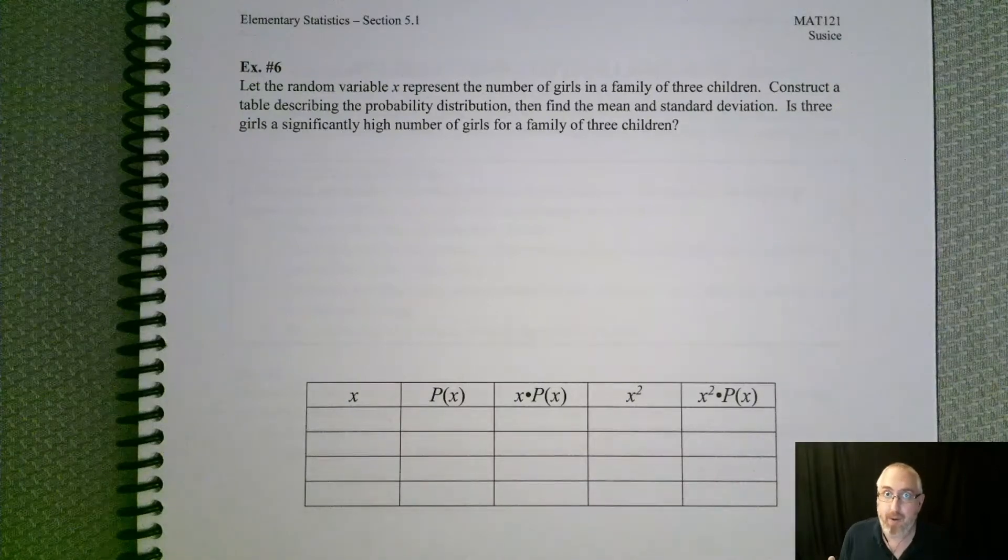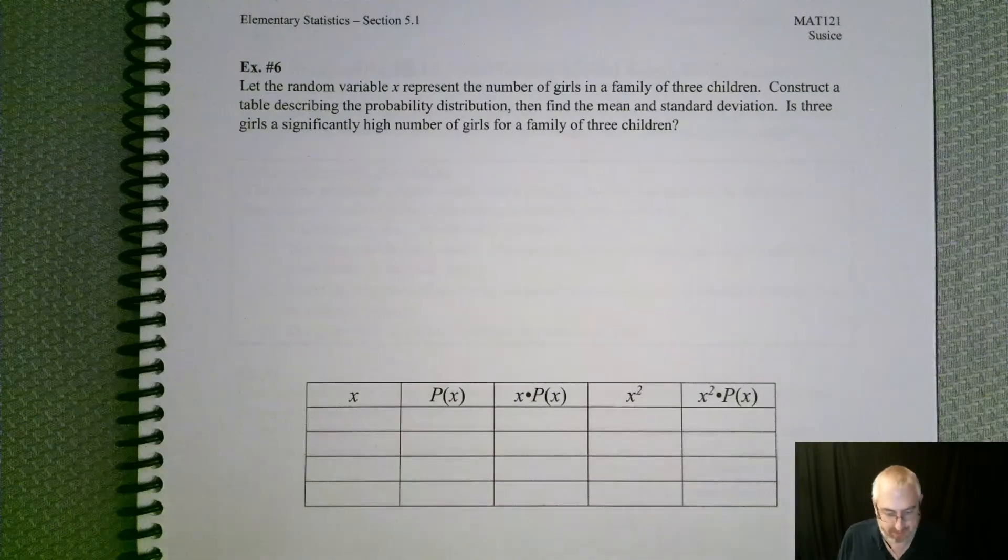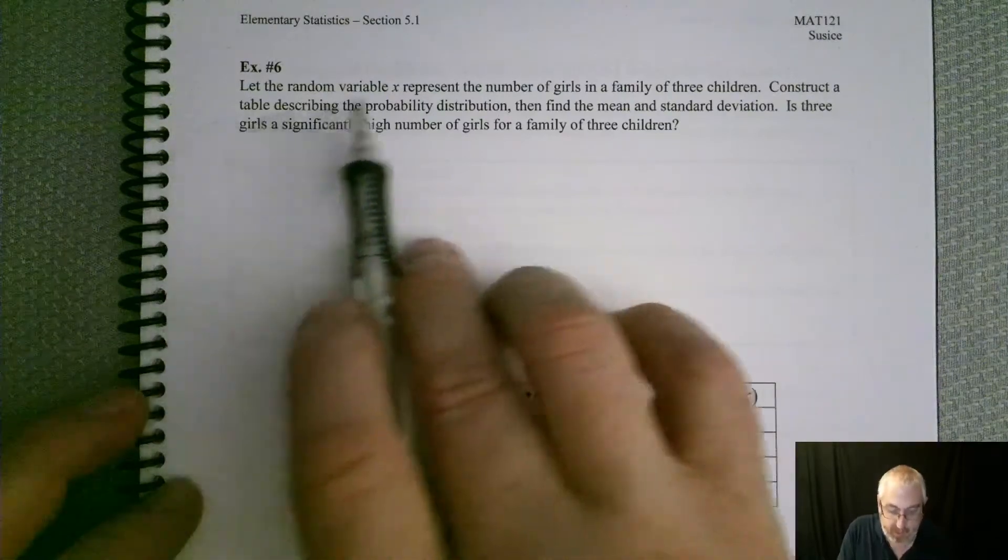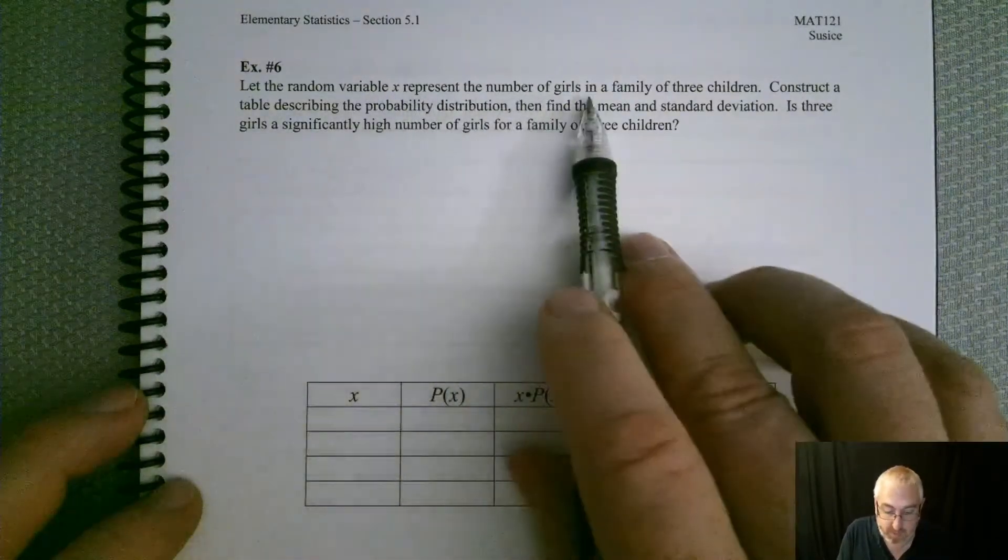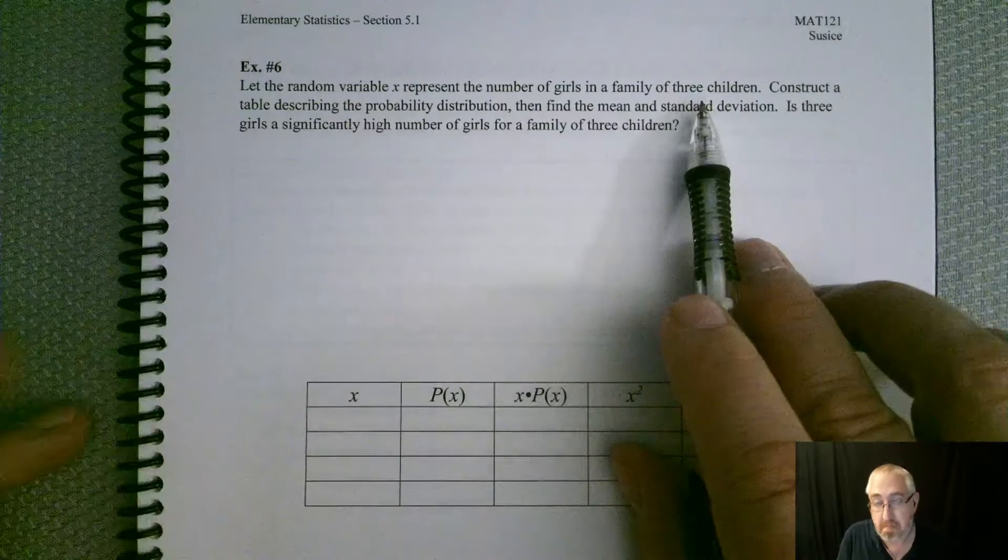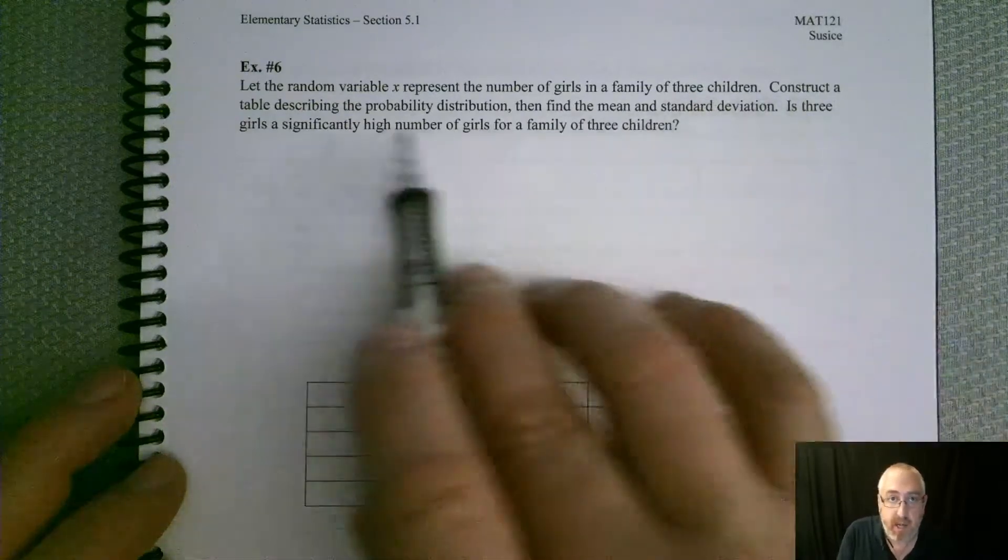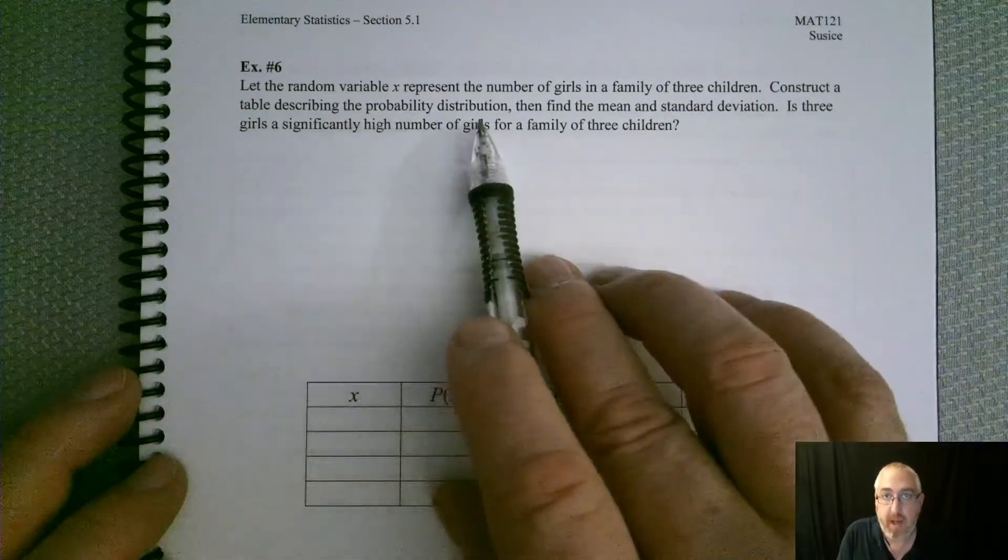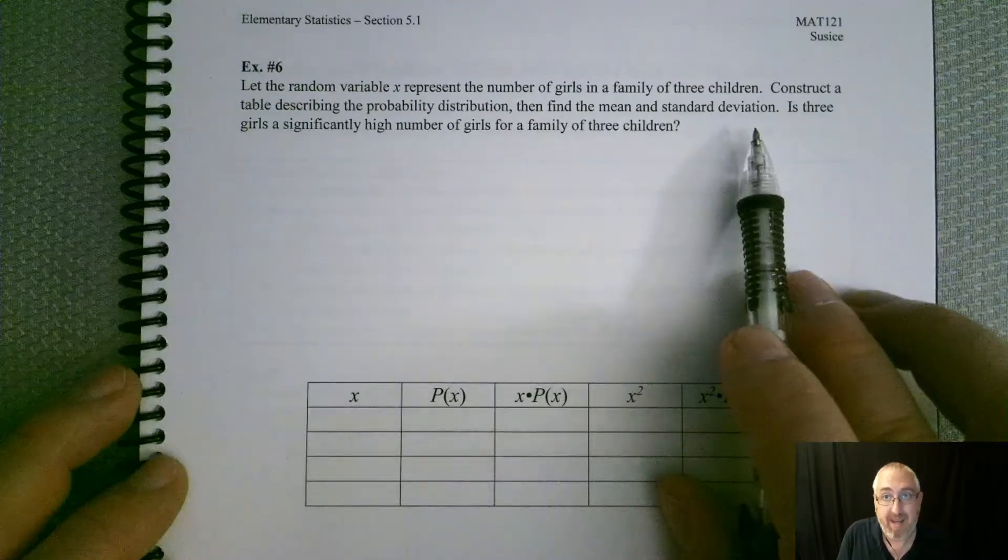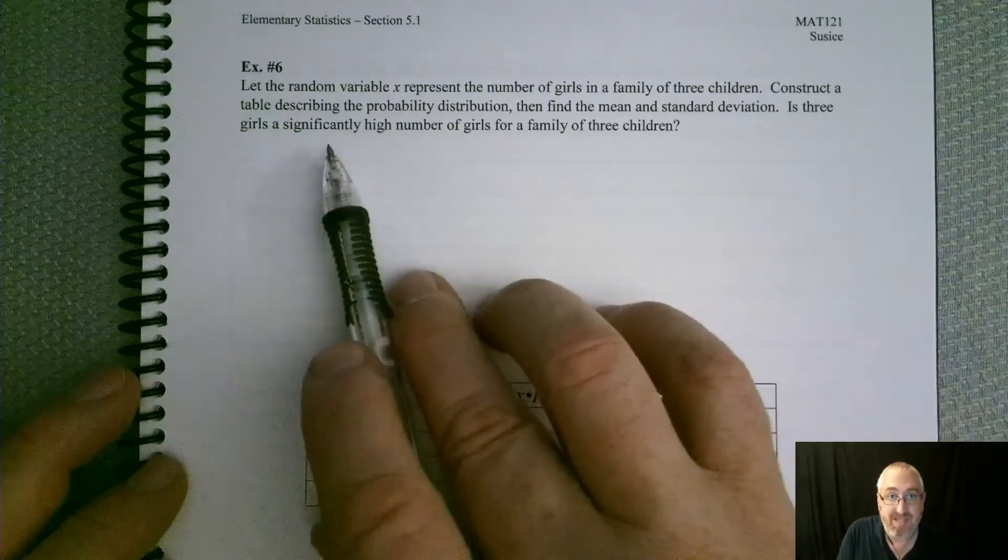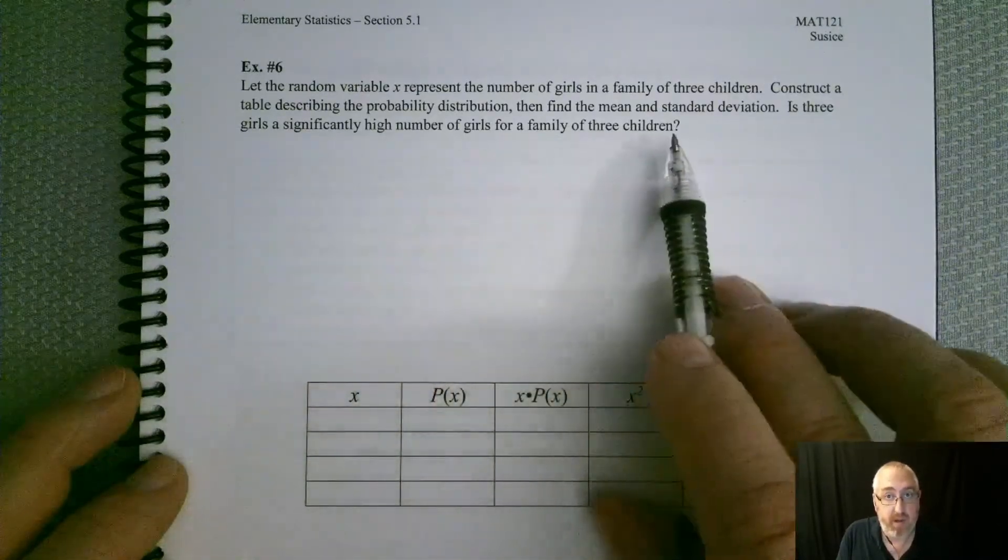So now we're at the final question for 5.1, example 6. Let the random variable x represent the number of girls in a family of three children. Construct a table describing the probability distribution, then find the mean and standard deviation. Is three girls a significantly high number of girls for a family of three children?